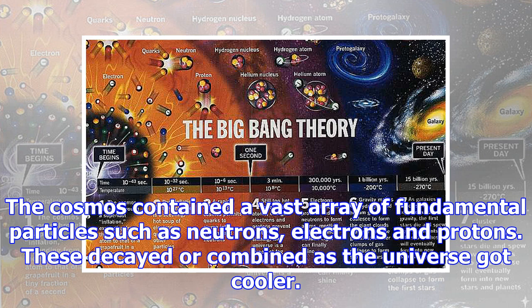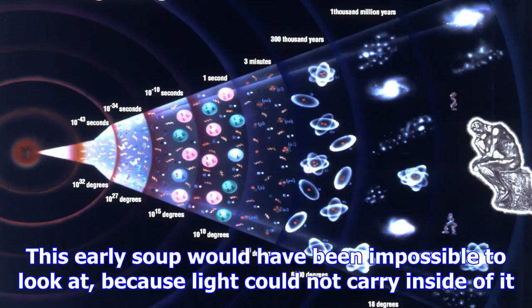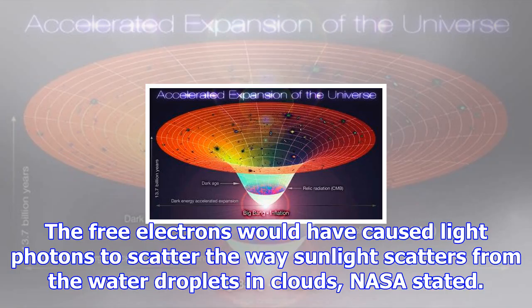In the first second after the universe began, the surrounding temperature was about 10 billion degrees Fahrenheit, 5.5 billion Celsius, according to NASA. The cosmos contained a vast array of fundamental particles such as neutrons, electrons and protons. These decayed or combined as the universe got cooler.